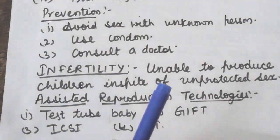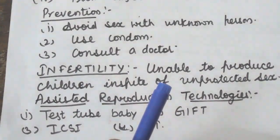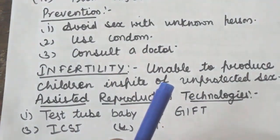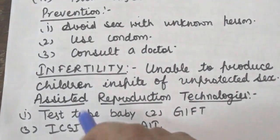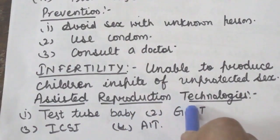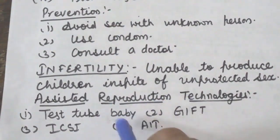However, there are some disorders where corrective treatment is not possible. In such cases, couples are assisted to have children through certain special techniques known as Assisted Reproduction Technologies, or ART.